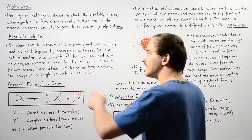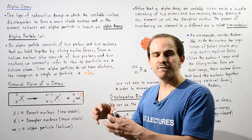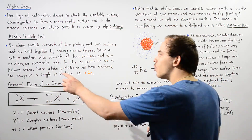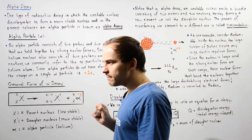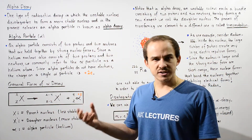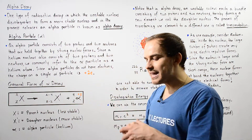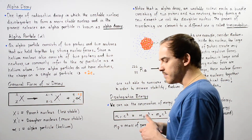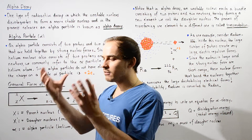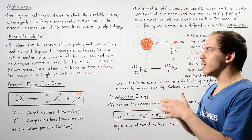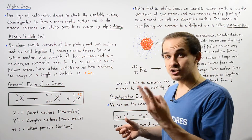Since a helium nucleus also consists of two protons and two neutrons bonded together via strong and weak nuclear forces, we commonly refer to the alpha particle as a helium atom. The only difference is that a neutral helium atom contains two electrons forming an electron cloud around the nucleus, whereas an alpha particle does not contain any electrons.